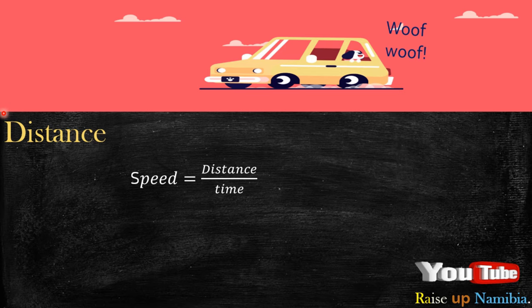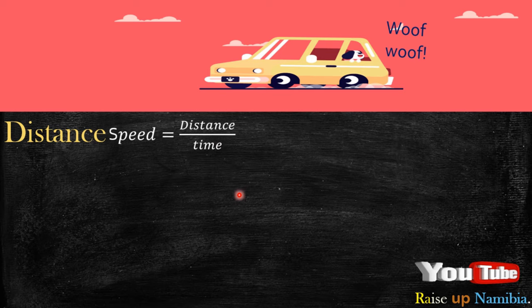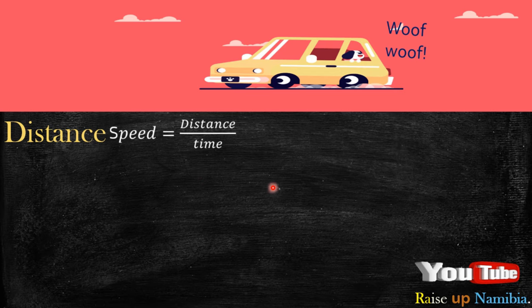Now how do we calculate distance? We use the same equation that we used in the previous video, which was speed equals distance over time. Now this is the symbol equation. The V represents speed, and then the little letter D represents distance, and then the T for time.